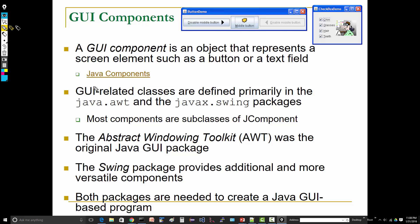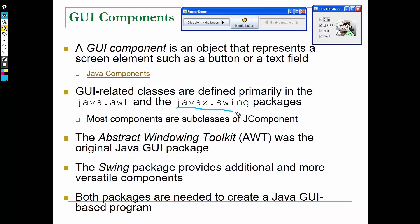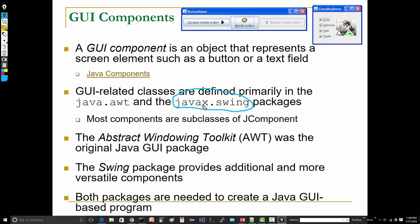GUI-related classes are defined primarily... the one I want you to pay attention to is this one right here: javax (for Java extension) dot swing. Those are where the Swing components are located.